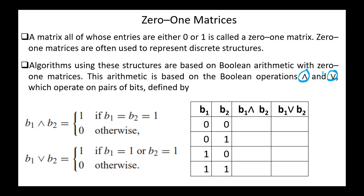The AND operation is defined by: B1 AND B2 equals 1 if and only if B1 equals B2 equals 1, and 0 otherwise. In the truth table, the AND column reads 0, 0, 0, 1.